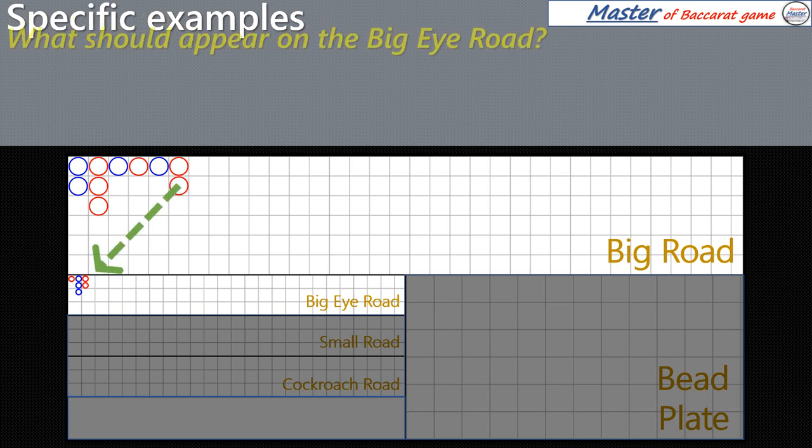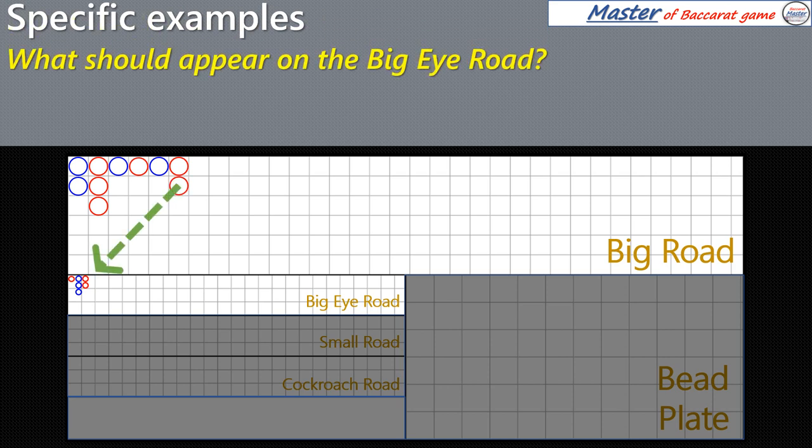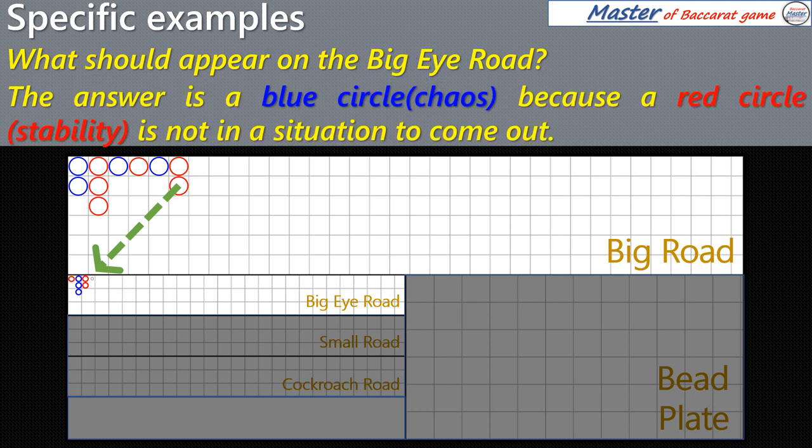What should appear on the Big Eye Road? The answer is a blue circle, because a red circle is not in a situation to come out.